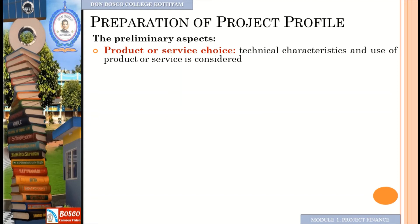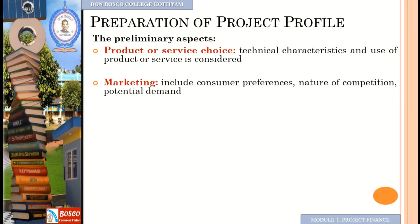The second preliminary aspect is marketing. It includes consumer preference, nature of competition, and potential demand. Once we decide to produce a product or service, we consider the marketing aspect — customer preferences, customer needs, and the type of product or service.